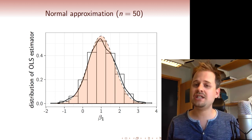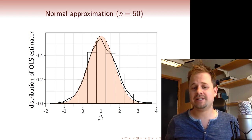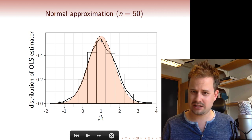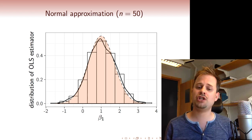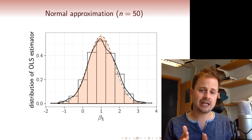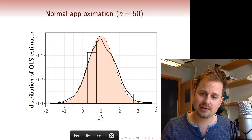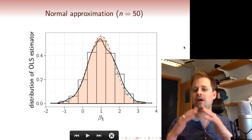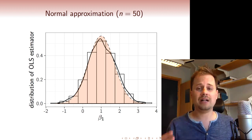Let's look at the quality of the normal approximation in our Monte Carlo simulations. I simulated the distribution of beta 1 hat, shown here by the density drawn with a solid line. I've also drawn the density of a normal distribution with the appropriate expectation and variance, shown with a dashed line. As you can see, these two densities almost coincide, meaning the normal approximation works very well in this example — even with a sample size of just n equal 50, which isn't very large.